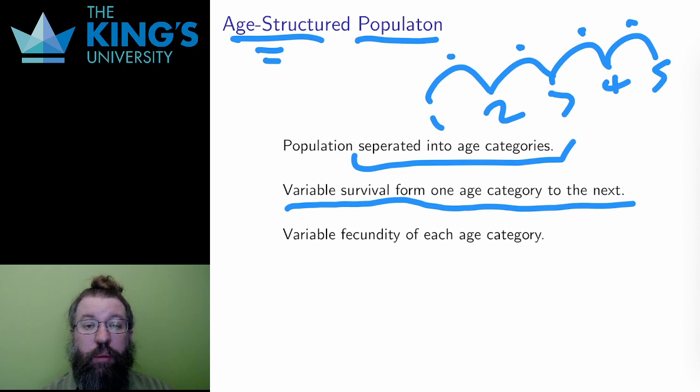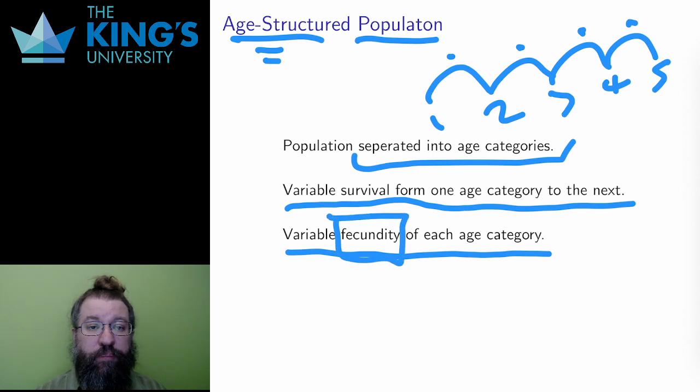And likewise, instead of a generic birth rate, I need to know the birth rate from each age category. And these are called fecundity rates. There may be fewer of these, or rather, some of them might be set to zero, since only certain age categories might be fertile. But again, in theory, I have to set up these rates. How do I track all of this information? Well, I can do it with a dynamical system.